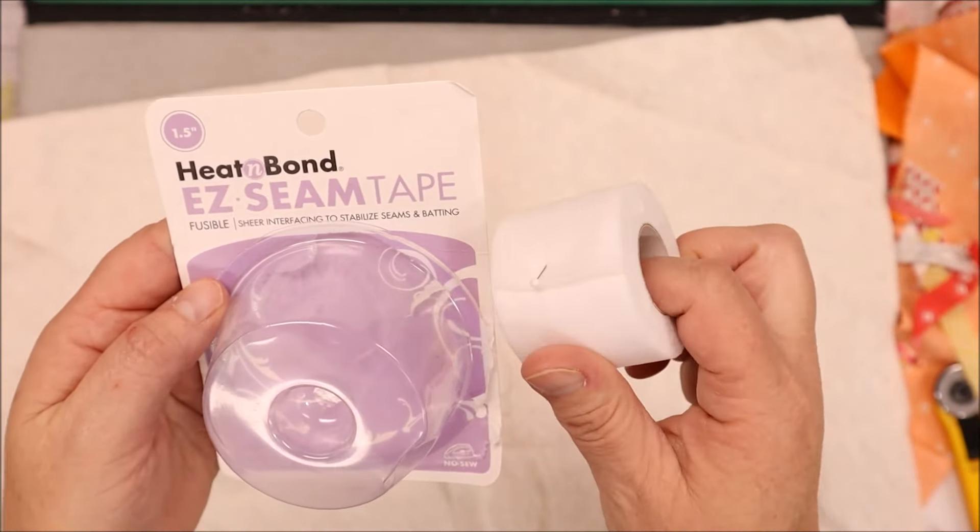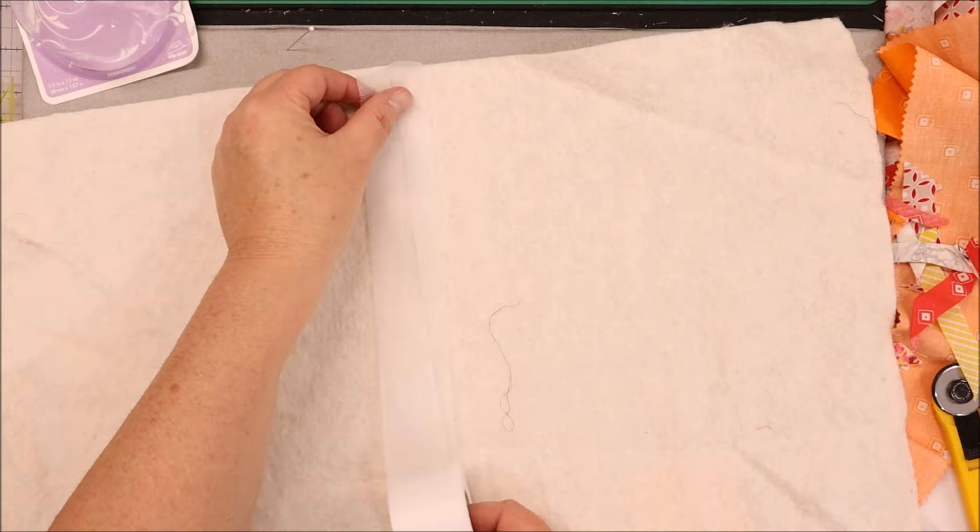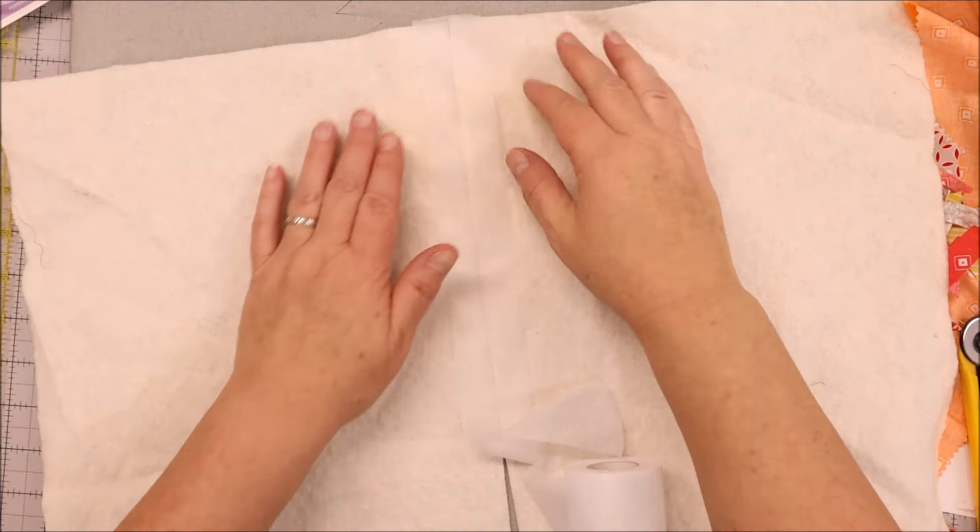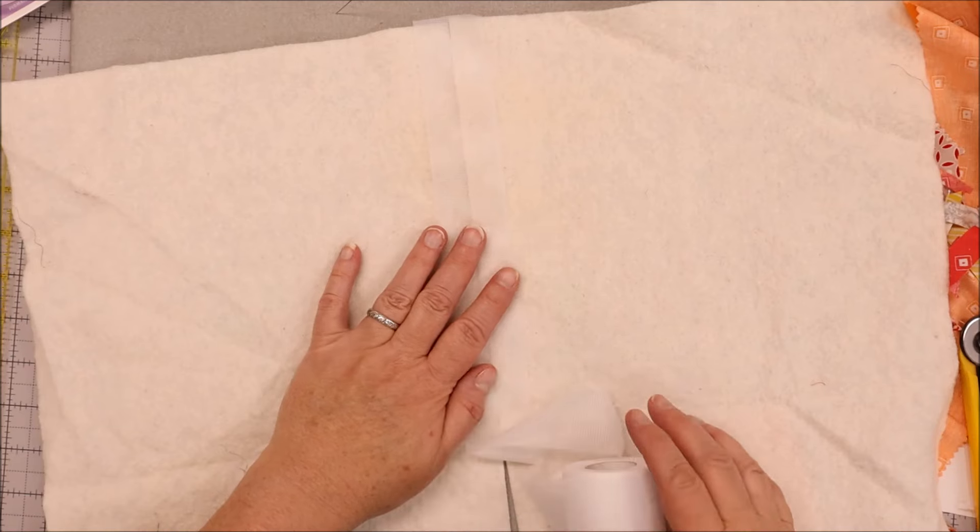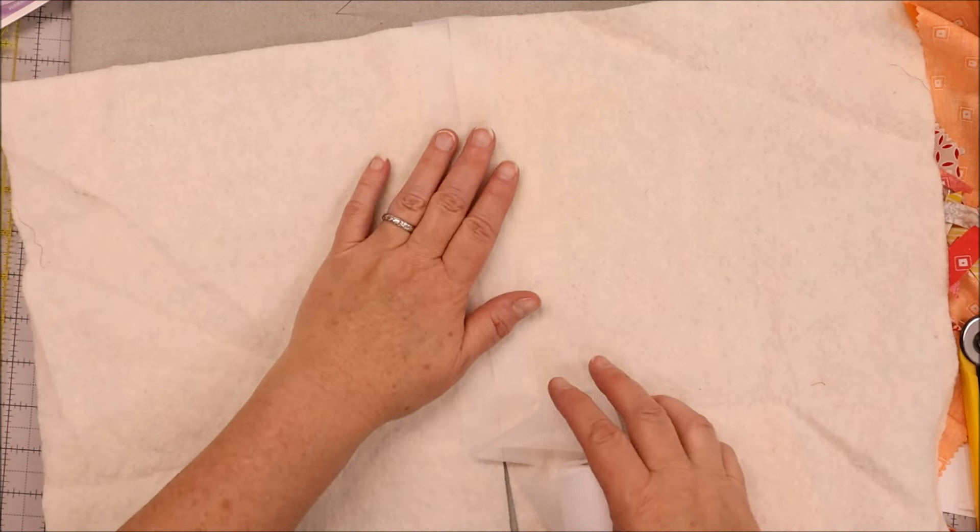Now if you are zigzagging your batting together, it's okay if they don't match, but for this it's a lot easier if they do. Now that we have our pieces straight, what we're going to do again is place right sides facing up, whatever those right sides are, and you are going to get Heat and Bond.